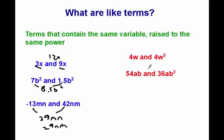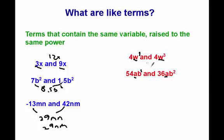Over here we have some examples of terms that are not like terms, like 4w and 4w cubed. Ignore the fact that they both have a 4 — the coefficients don't matter. They have the same variable, but this is w to the first power and this is w to the third power, which makes them not like terms. In order to be like terms, they have to have the same exponent. Similarly, 54ab and 36ab squared: the a's are the same power, but the b's are b to the first and b squared, which are not the same, so these are not like terms and cannot be combined.